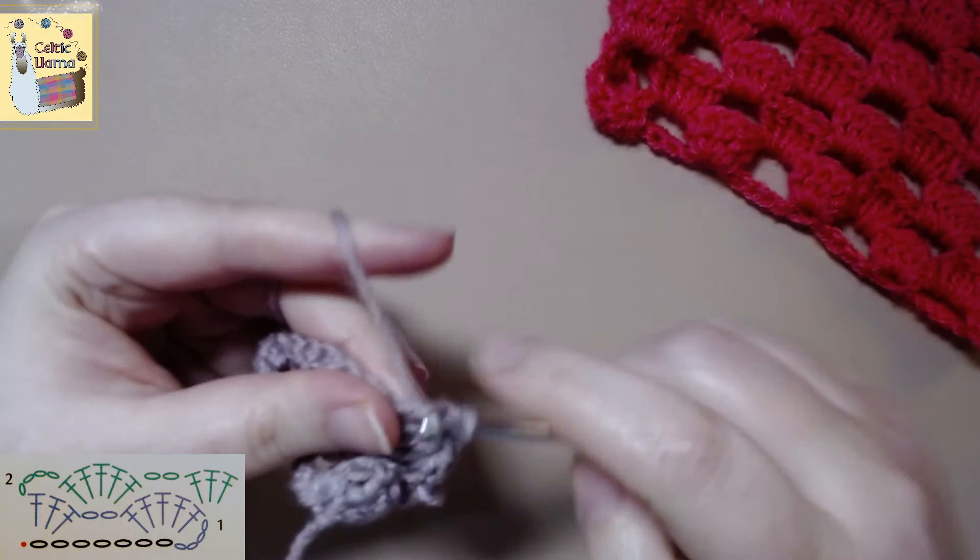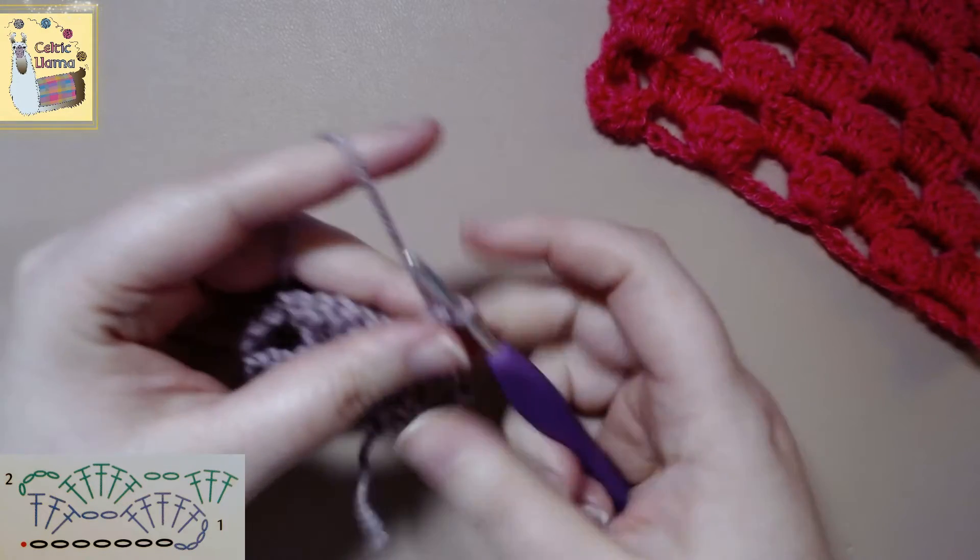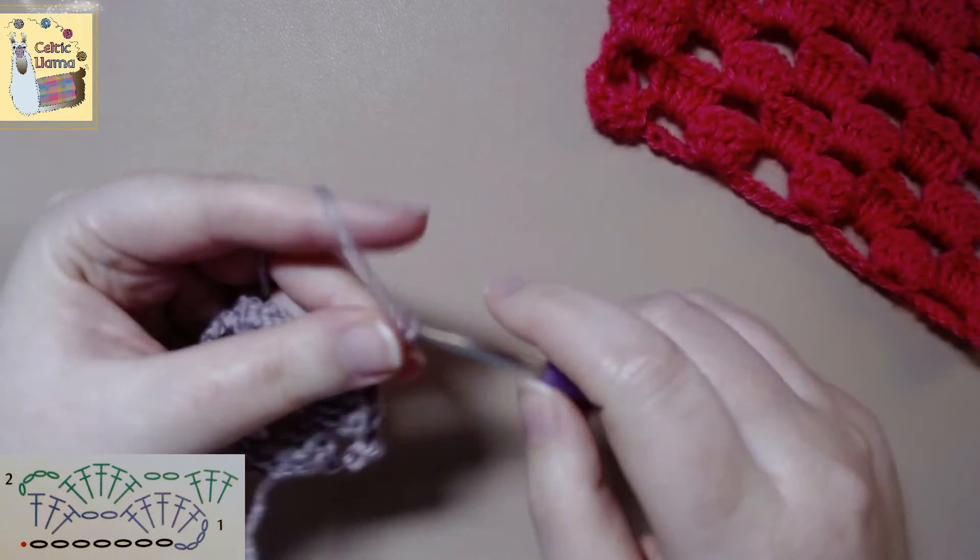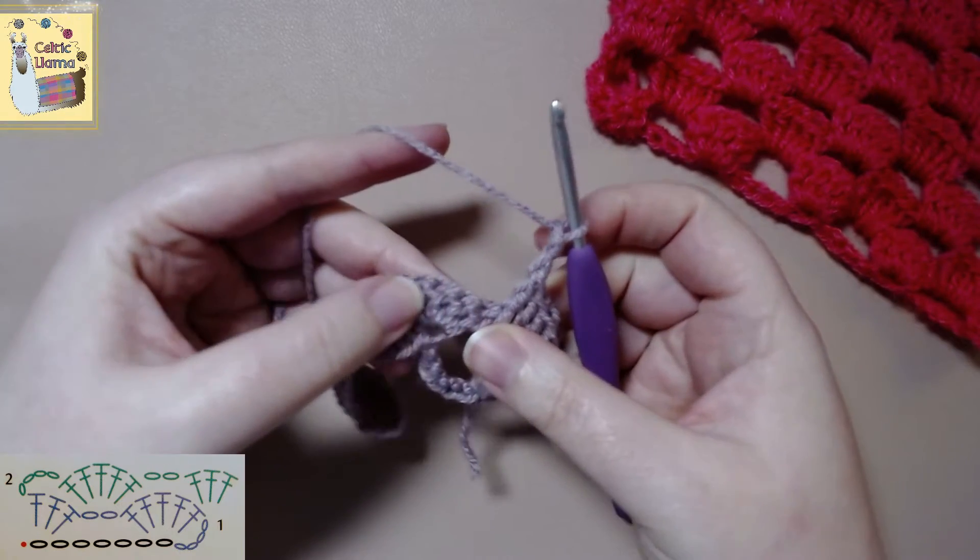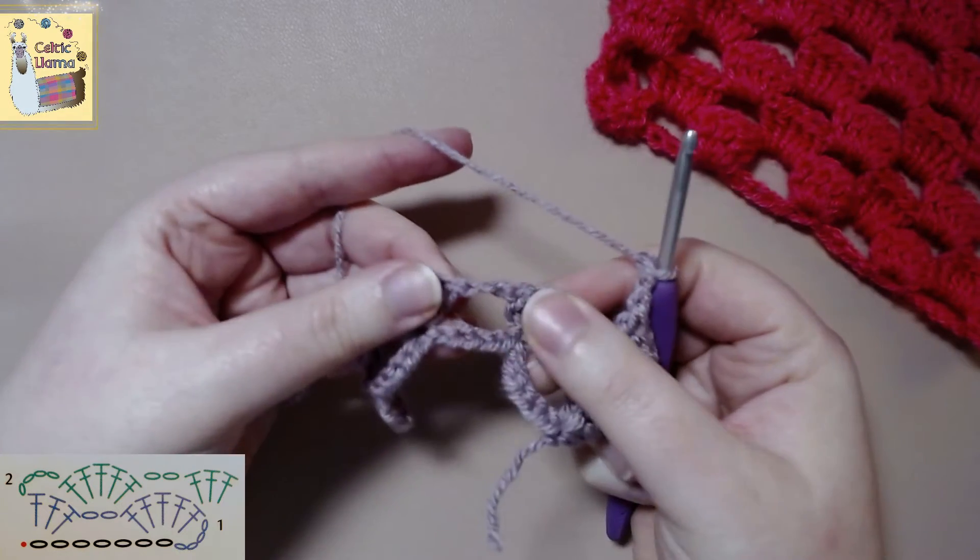From here on out we're just going to do the chain two and work five double crochets in that chain two space from the previous row.